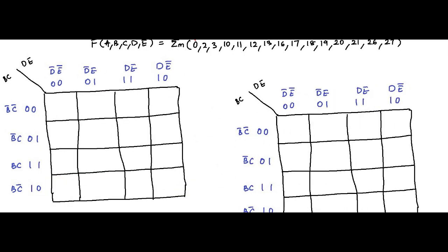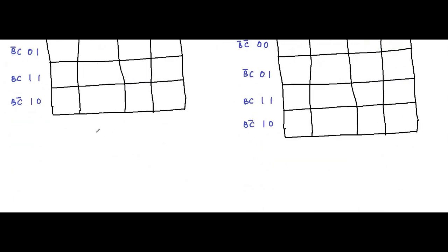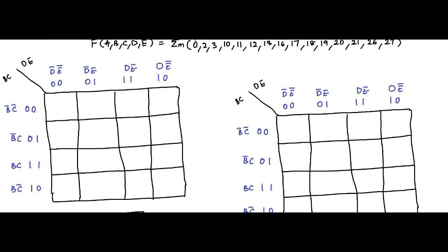The first K-map is for A equals 0 (A-bar in the MSB position), so minterm values go from 0 to 15. The cells are numbered: 0, 1, 2, 3, 4, 5, 6, 7 across the top rows, and 8, 9, 10, 11, 12, 13, 14, 15 in the bottom rows.